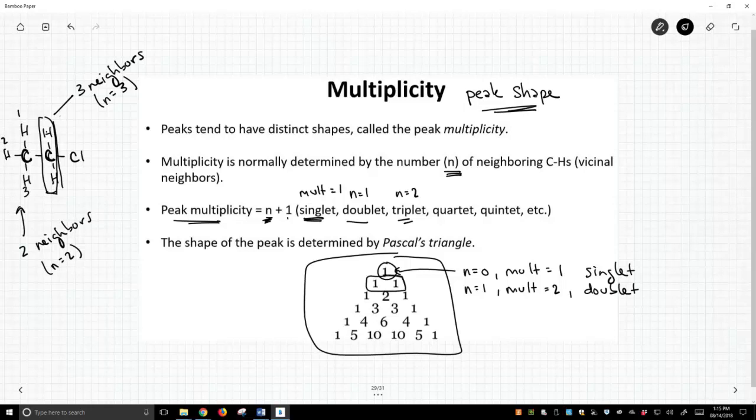And moreover, Pascal's triangle tells us the two peaks are going to have an intensity of one to one. Okay, I'm not going to fill out this whole thing, but if N equals two, the multiplicity is going to be three, and this is going to be a triplet. What's the relative intensity of those peaks? Well, it's going to be one to two to one is the relative intensity. And so these are going to have distinctive shapes. Let's not get lost in Pascal's triangle. Let's see how it applies in two examples.